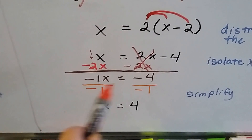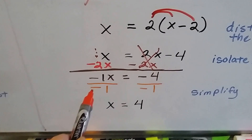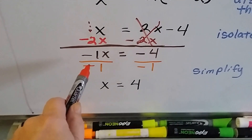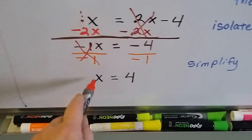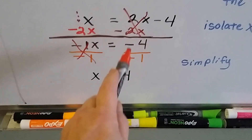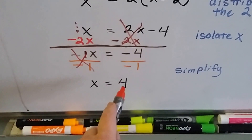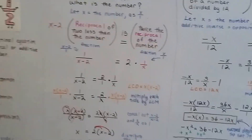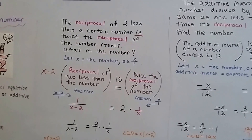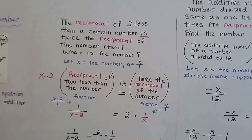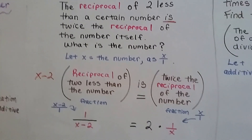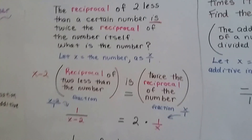We get rid of the negative by dividing both sides by negative 1. A negative divided by a negative makes a positive, so x equals 4. The reciprocal of 2 less than a certain number that is twice the reciprocal of the number itself is 4. We broke it into little pieces to figure out what it means.